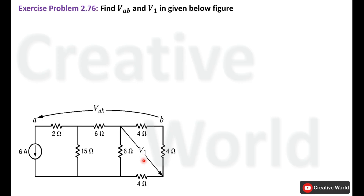To calculate the voltage between these points, we need the values of current through these resistances. Right now the current through these resistances is not provided. First we will find the current through these resistances, then use Ohm's law to calculate the voltage across them. Later we will calculate the voltages across these points, which are the sum of the voltages across the individual resistances.